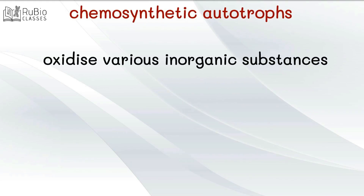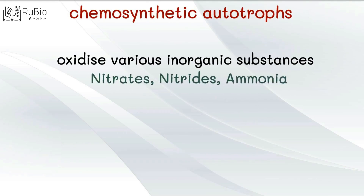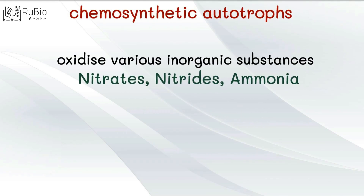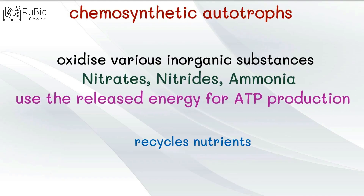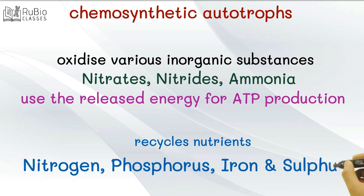The chemosynthetic autotrophs oxidize various inorganic substances, such as nitrates, nitrides, and ammonia, and use the released energy for their ATP production. They play a great role in recycling nutrients like nitrogen, phosphorus, iron, and sulfur.